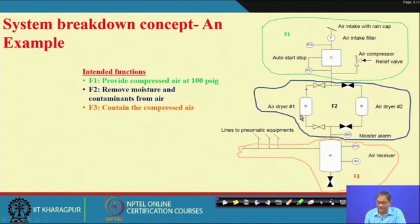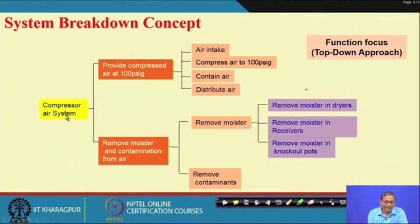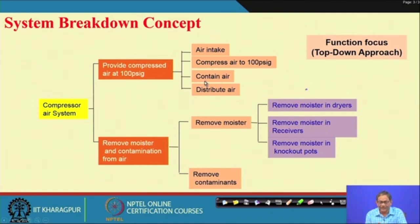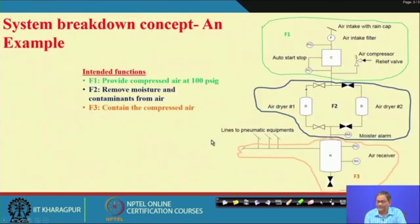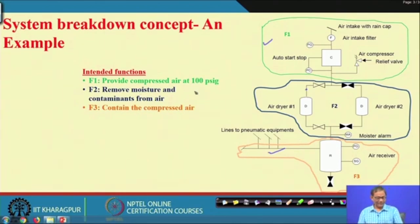With reference to this, the functional breakdown — you see the compressed air system: what is the purpose of this compressor system? Provide compressed air at 100 PSIG, remove moisture and contamination from air — these are the two things to be done. When we talk about providing compressed air, these are the sub-functions: intake air, compress air, contain air, distribute air.